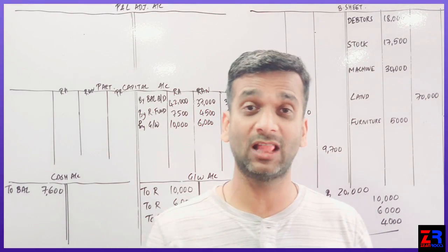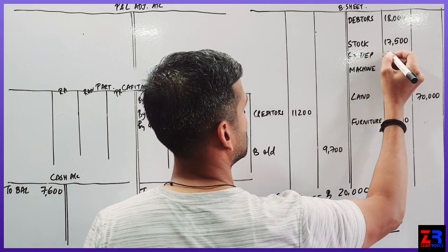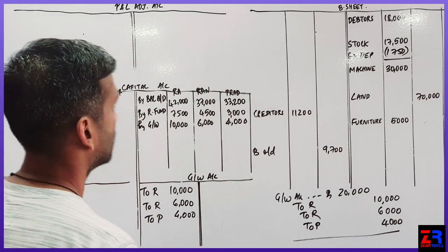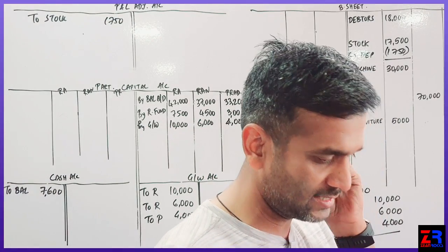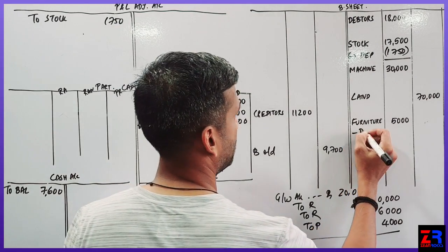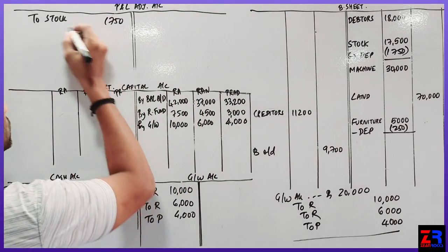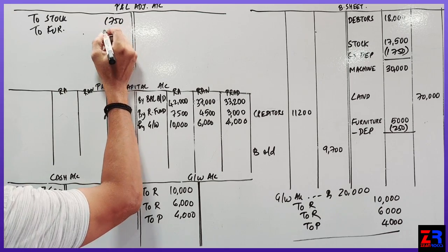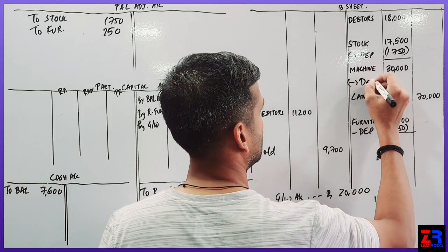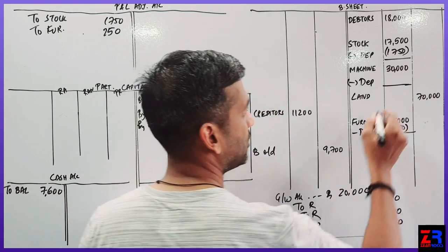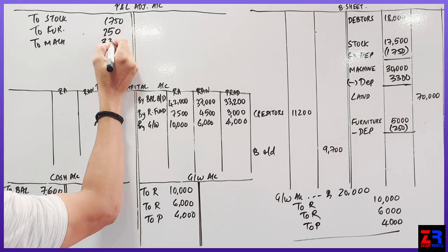Adjustment number 2, third class adjustments. Stock reduced by 10%, less depreciation 1750, 10% stock, stock 1750. Furniture by 5%, less depreciation 5%, so 500. To furniture, how much? 250. Machinery by 11%, machinery less depreciation. Machinery ka 11%, kitna aega? Very good. 3300. To machinery, kitna? 3300.